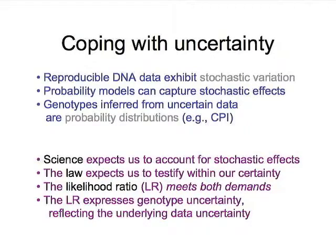In nature, we have uncertainty. All data that we get in science is not completely reproducible. If you were to re-amplify data and see exactly the same peaks, you'd know there'd be a mistake in the file. Reproducible DNA data exhibits stochastic variation. The question is, what do we mean by reproducible? I'll discuss that in the next few minutes.